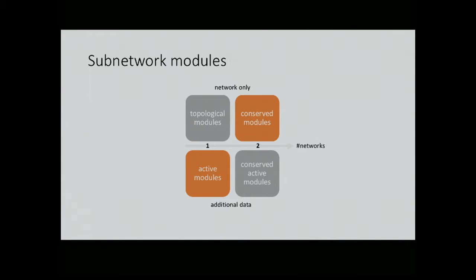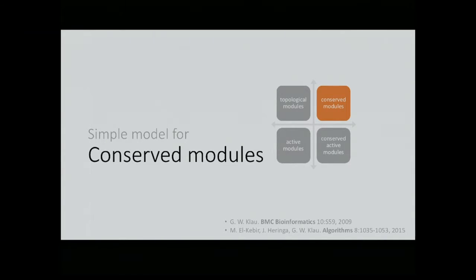If you have two or more networks, then you can identify modules by comparing similar structures between these networks, maybe from different species or strains. You can do this by network alignment and this way you can find conserved modules. I will present my work on this part shortly. If you do have additional data, you can look for active modules given that data. You can combine this - if you have additional data and multiple networks, you can even look for conserved active modules.